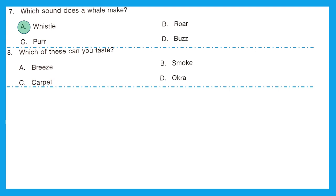Question 8, which of these can you taste? We taste only those things which we can eat. Can we eat breeze? No. Can we eat smoke? No. Can we eat carpet? Not at all. But can we eat okra? Okra is ladyfinger, which is a vegetable. Yes, we can eat and taste it. Option D is the right answer.